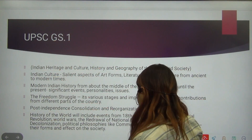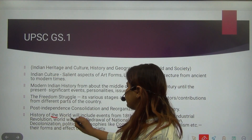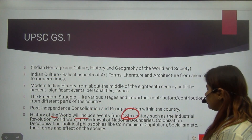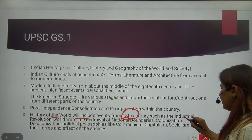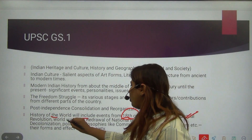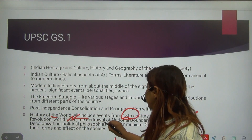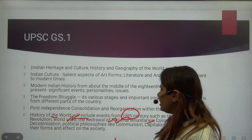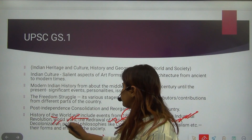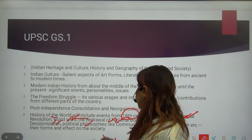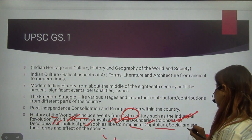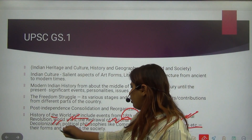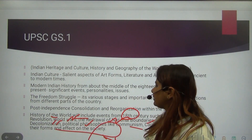Now, history of the world — what will happen here. From the 18th century onward, events like the Industrial Revolution, World Wars, redrawing of national boundaries, colonization, decolonization, and political philosophies like communism, capitalism, and socialism — their forms and their effect on society.